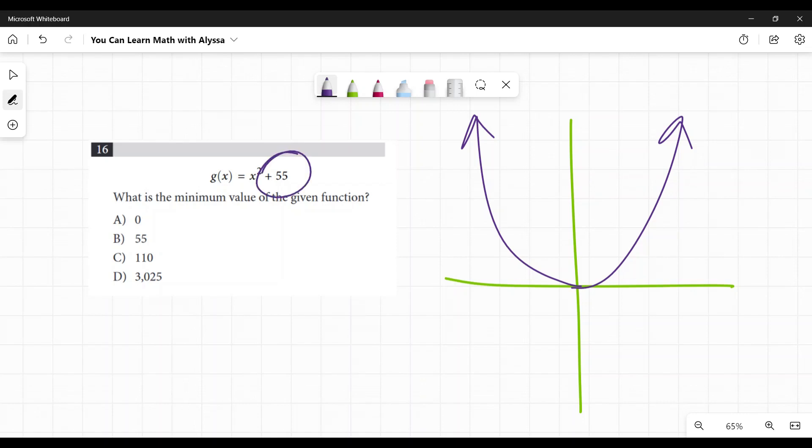If you have a number that's outside the x squared for a function, it's a plain constant number, this is going to move this function up or down on the y-axis, and it is direct. So a positive 55 is going to move it up 55.